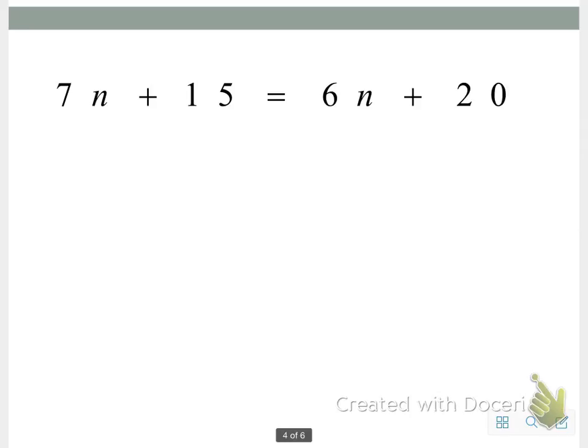So we're going to find the inverse of our 6n, which will be negative 6n. So we're going to subtract that, and 6n. 6n minus 6n gives us 0 and 7n minus 6n gives us 1n.